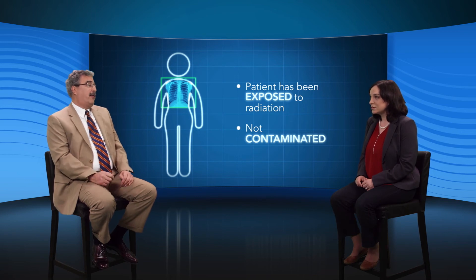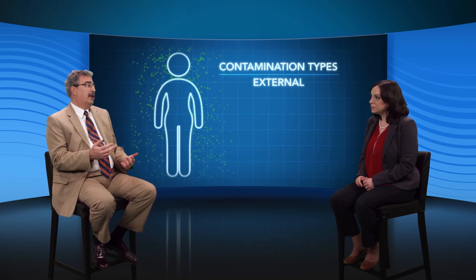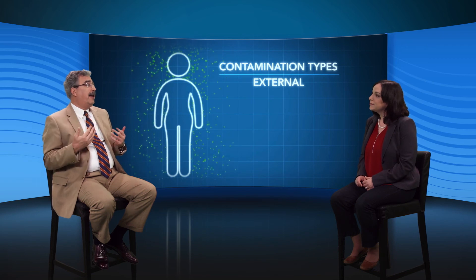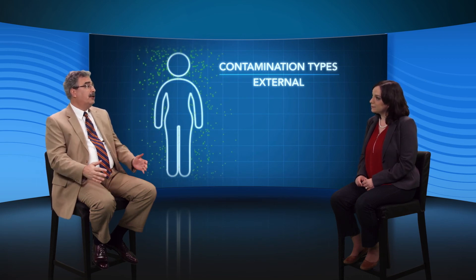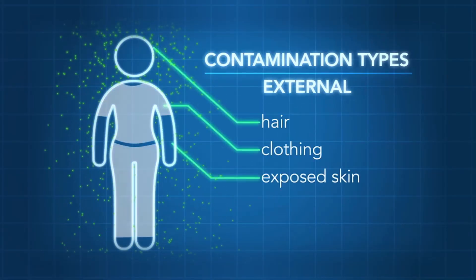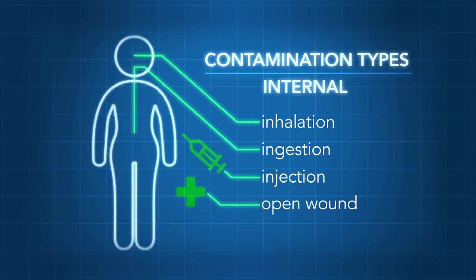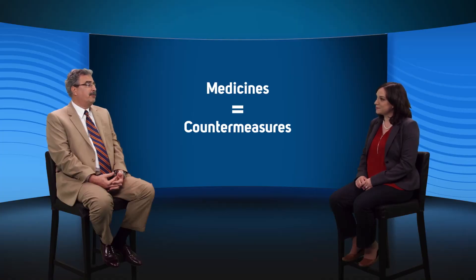Exactly. Now in contrast, if radioactive material gets on our clothing, skin, or hair, it contaminates us. We call this external contamination because it's on the outside of our bodies. External contamination can be removed simply by taking off contaminated clothing and washing with soap and water. If we inhale or ingest radioactive material, we call that internal contamination because it's now inside our bodies. It's harder to remove internal contamination. Our bodies can get rid of some of it through metabolism and excretion. And for some types of radioactive material, we have medicines — we call them countermeasures — that can speed up the excretion process.